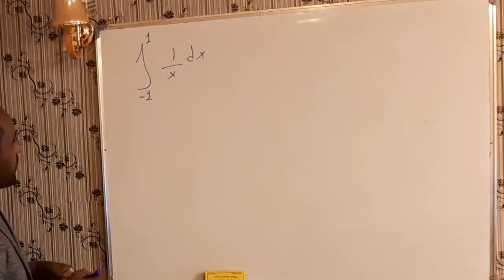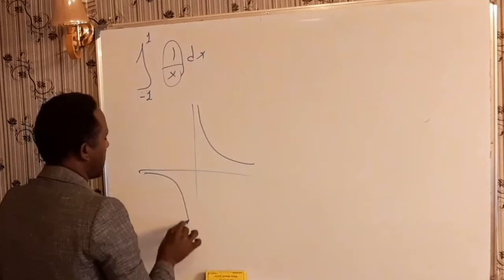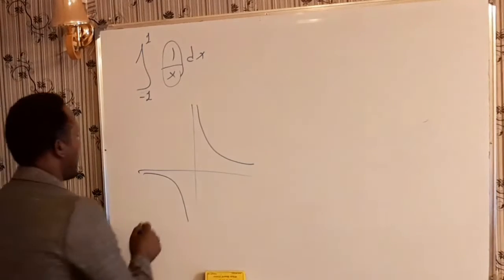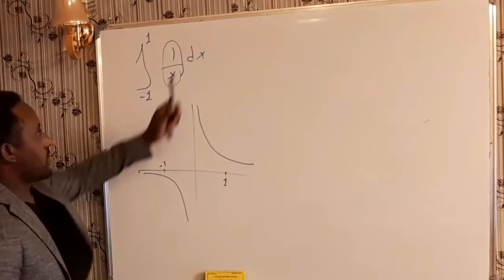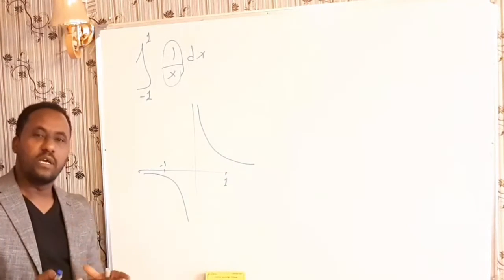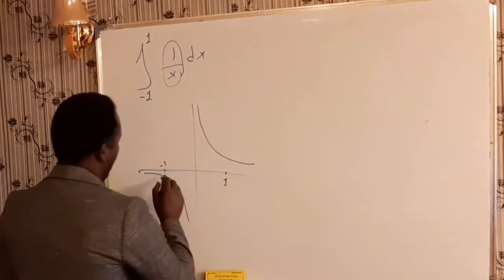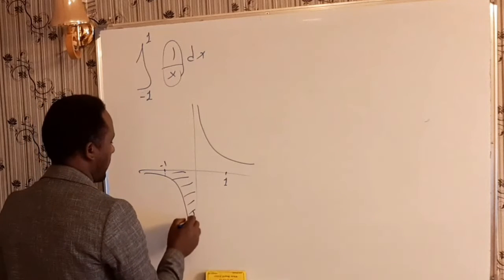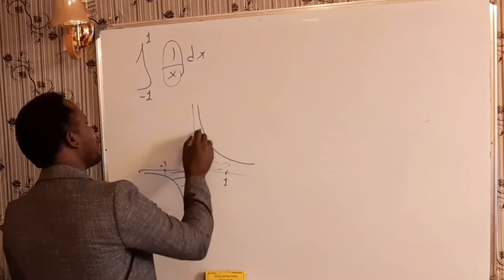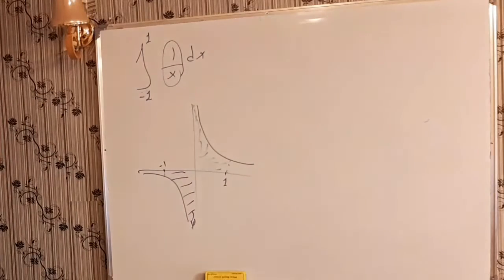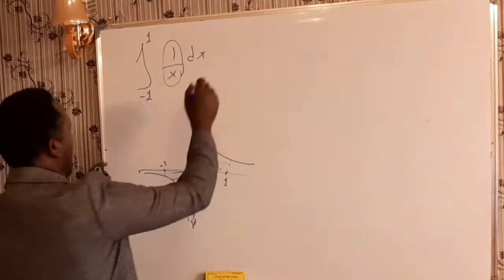The graph of this function is given like this. The area of this is given by this region. This is the graph of 1 over x. Now, the region runs from minus 1 here to 1 here. The importance of the definite integral is determining the area of the region bounded between the curve of the function and the upper and lower limits of the integral. The graph of this problem will be just like this.